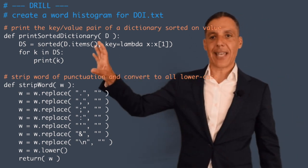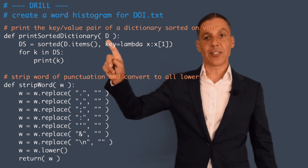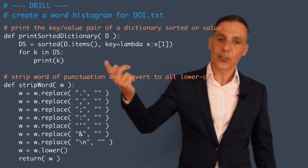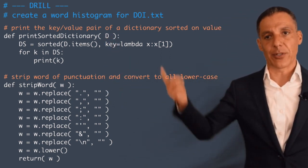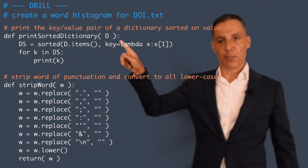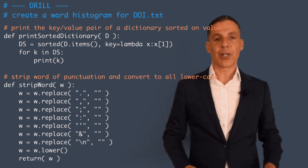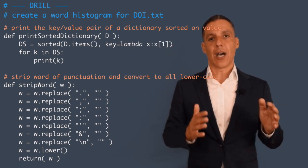You don't have to worry about exactly how this works, but what it does is it takes as input a dictionary. So obviously you should be using a dictionary to build the histogram, and it will print things out in sorted order on the frequency of each word.